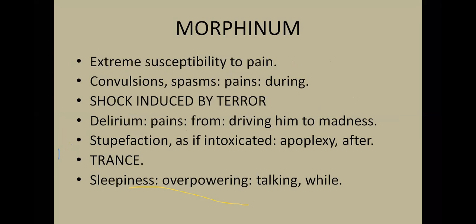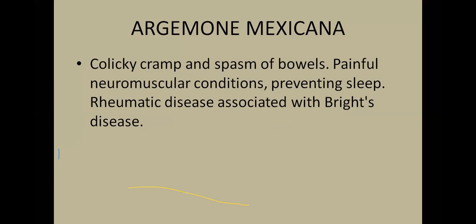Morphinum has 'extreme susceptibility to pain,' convulsions and spasms during pain, and shock induced by terror. It has delirium from pains driving the patient to madness. On the other side, it also has 'stupefaction as if intoxicated after apoplexy' and 'overpowering sleepiness while talking.' Morphinum thus clearly shows both sides of Papaveraceae: intense pain and suffering on one side, and trance, stupefaction, and sleepiness — withdrawal from the painful state — on the other.